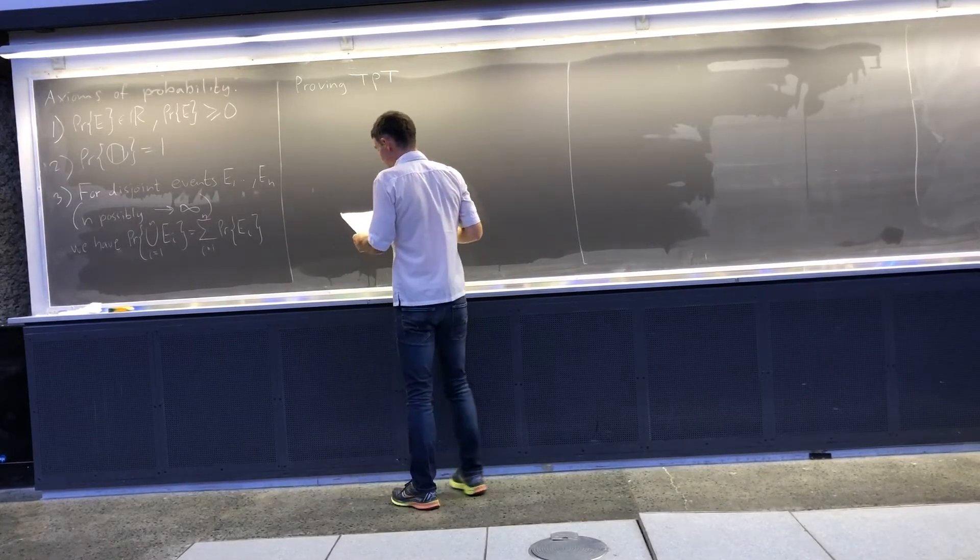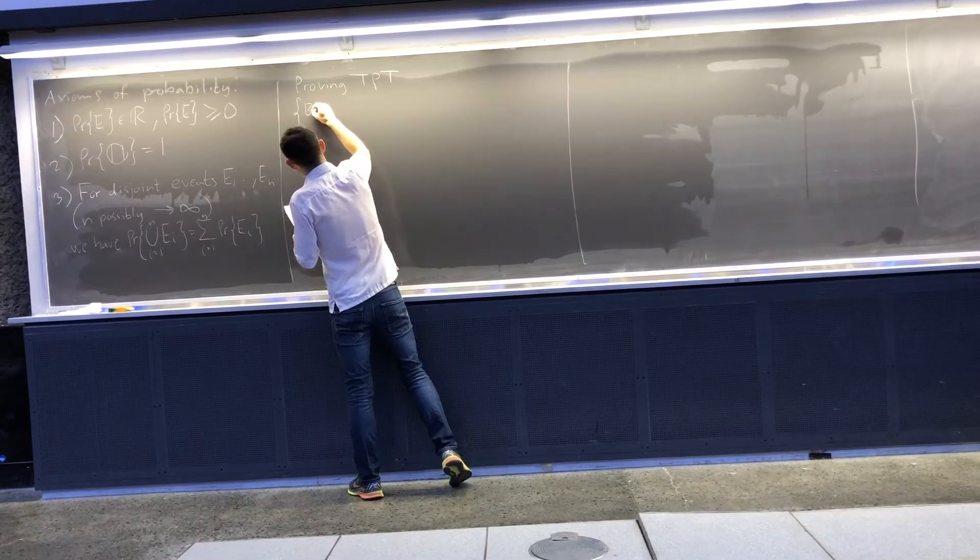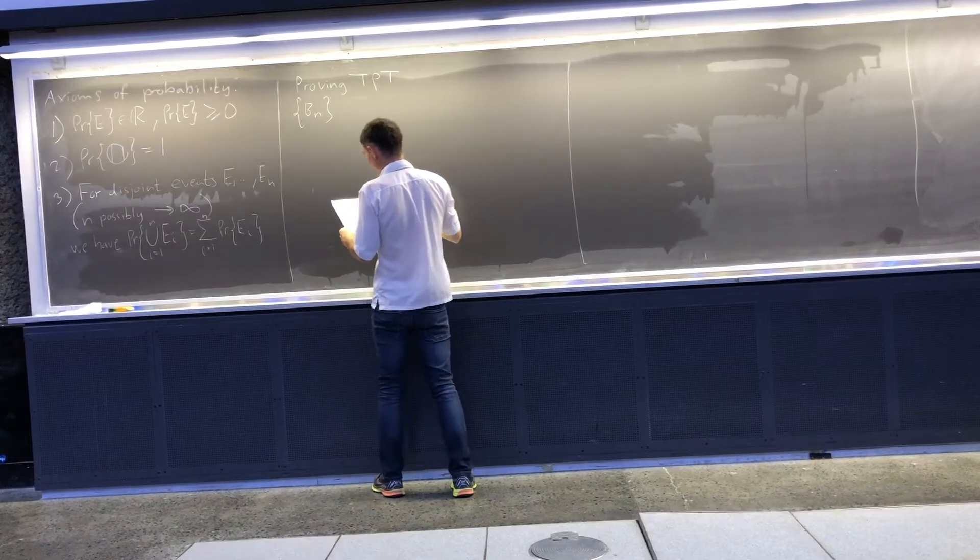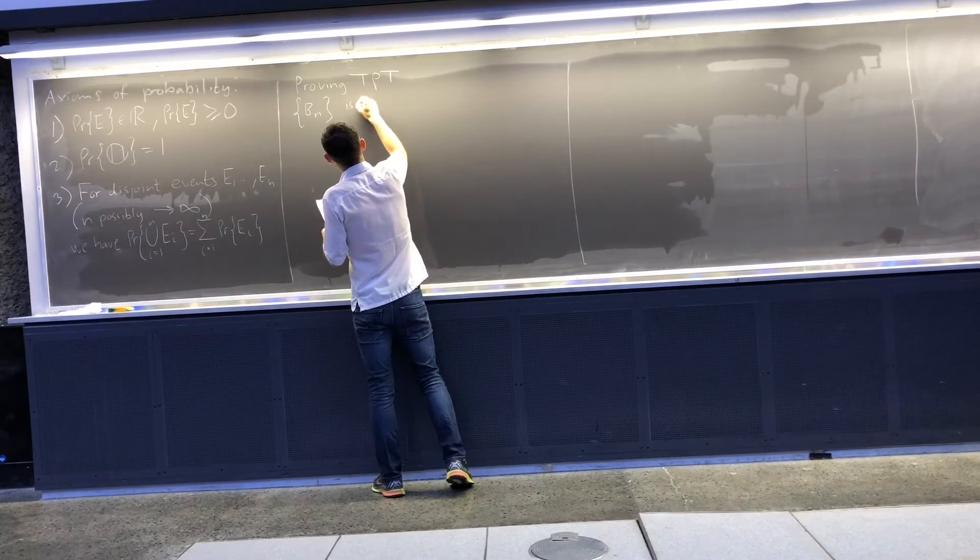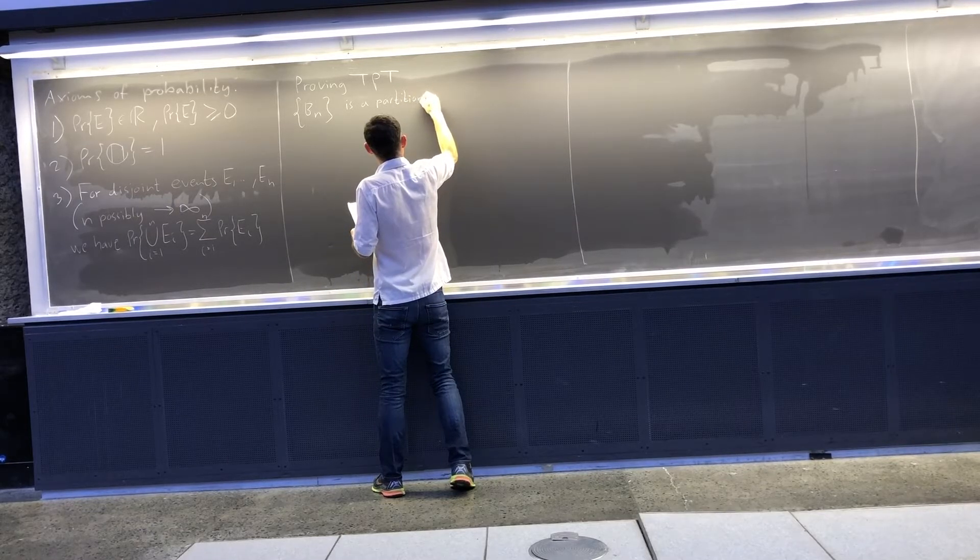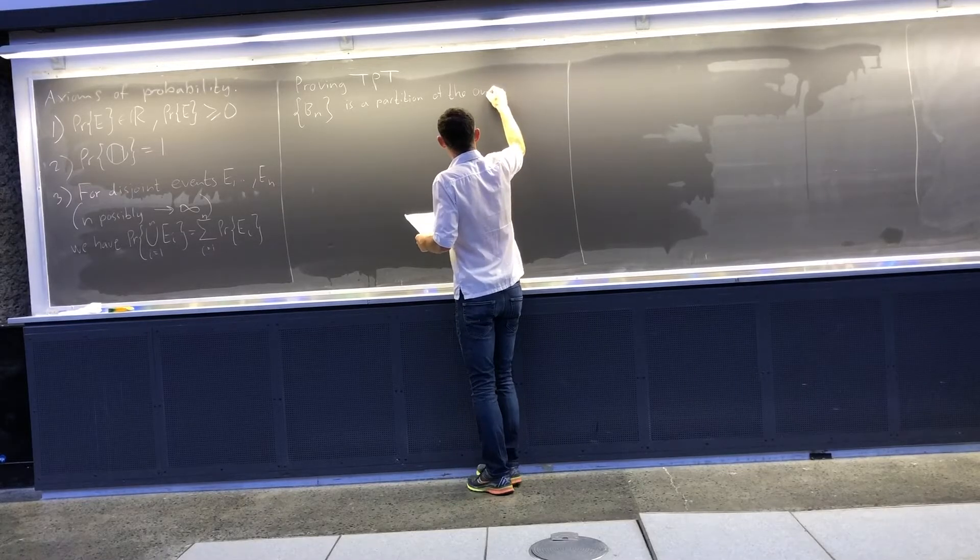After I wrote that, that's just TPT. Then I said that Bn, a collection of events, it's a partition of the outcome space.